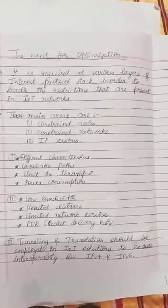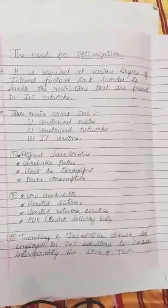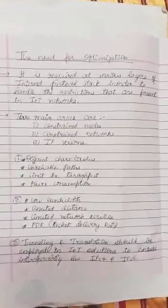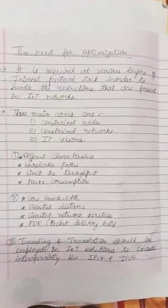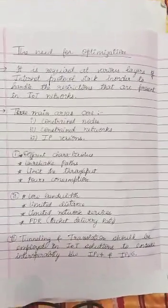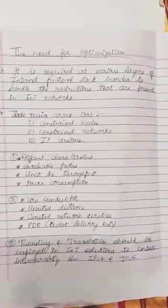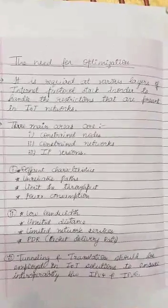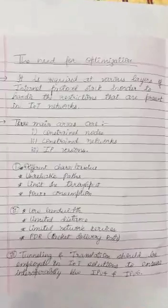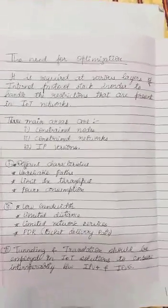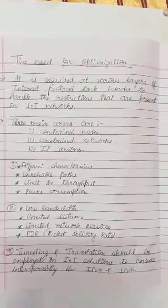Basically, because of constraint networks, constraint nodes, and IP versions, which impose major challenges for IoT infrastructure, we require this optimization. These are the main reasons why we need to optimize an IoT infrastructure. This was about the need for optimization.